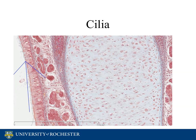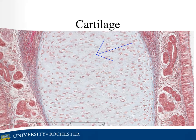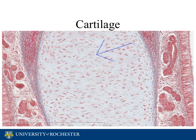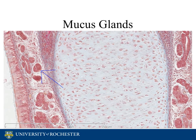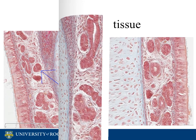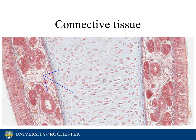This area here is the cartilage. And next to the cartilage are mucus glands, which are important for secretion of mucus. This area here is the connective tissue, which surrounds the mucus glands.